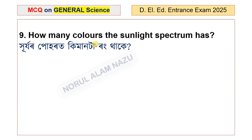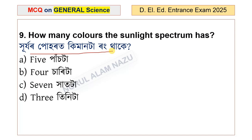How many colors does the sunlight spectrum have? The options are 5, 6, 7, and 3. There are 7 colors in the sunlight spectrum.